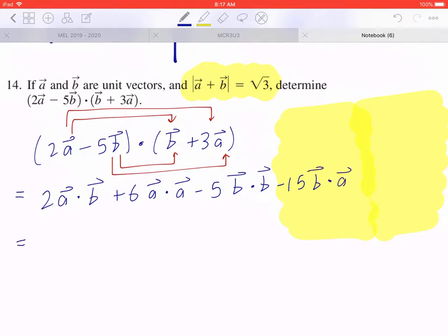So if you collect like terms, what you've noticed is that the first term is going to be 2a · b, and the last term is going to be -15b · a.